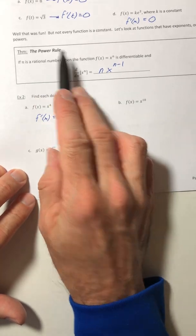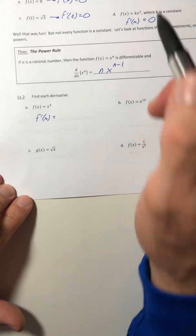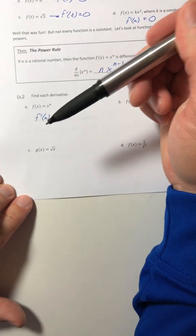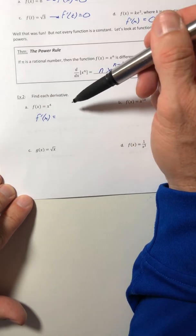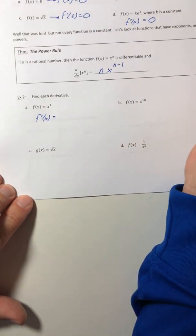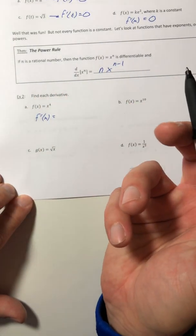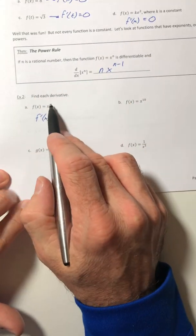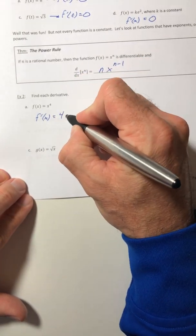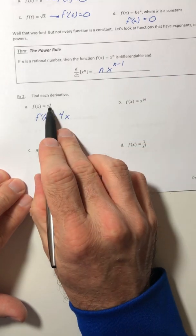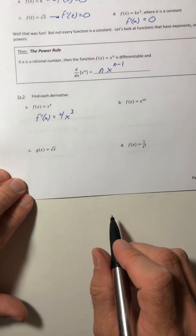Instead of using that limit definition, let's use the power rule. You can use the limit definition if you want to. It's not going to be wrong. I would only expect you to use it when it tells you to. It doesn't say that with this, so you can use any rule you want as long as it applies.